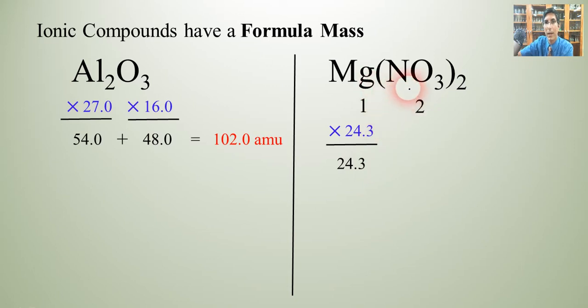For nitrogen we have two of those atoms. You know there was a one here but it's multiplied by two so we have two and nitrogen is about 14.0 so we get 28.0 for the nitrogens.